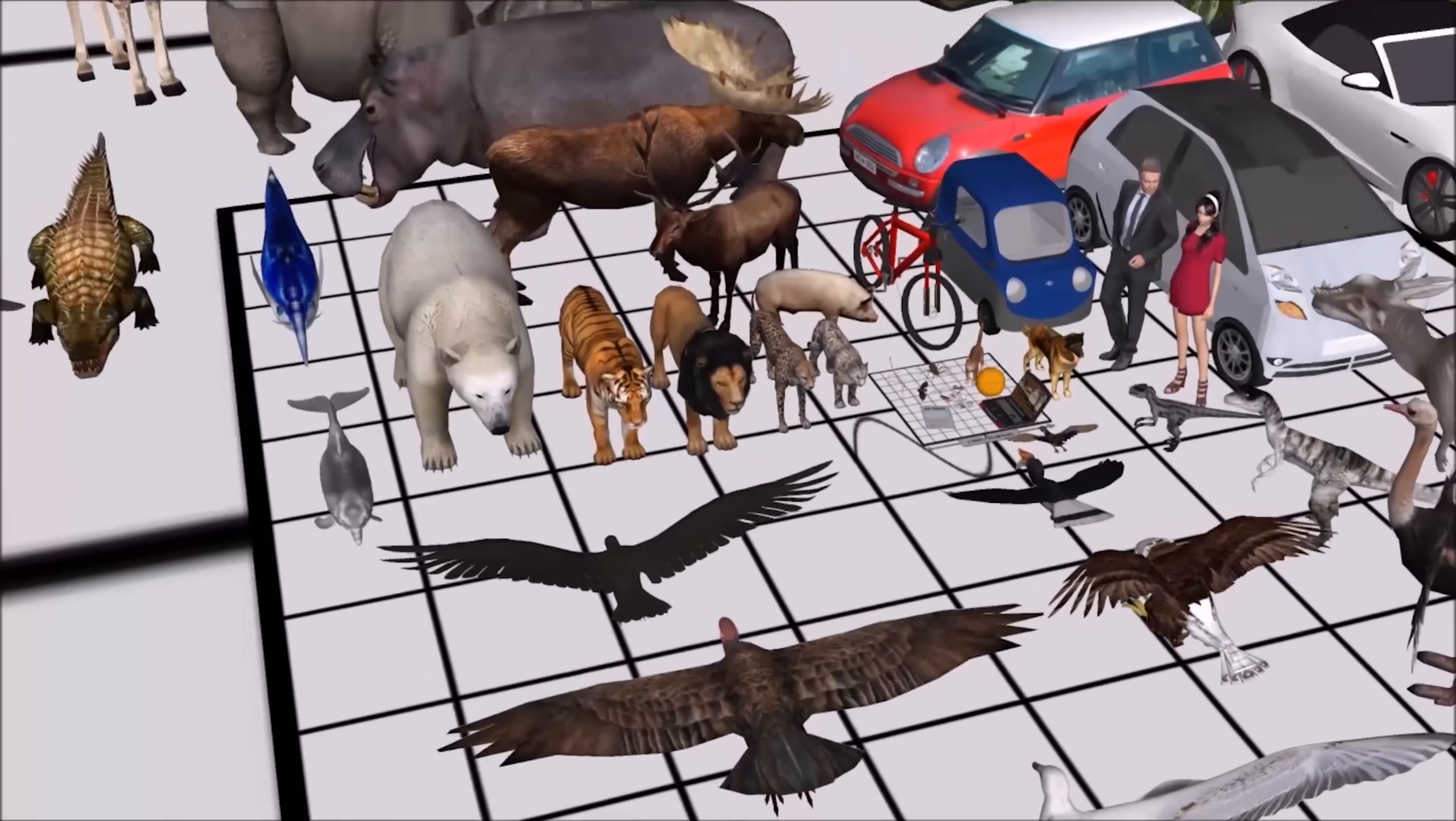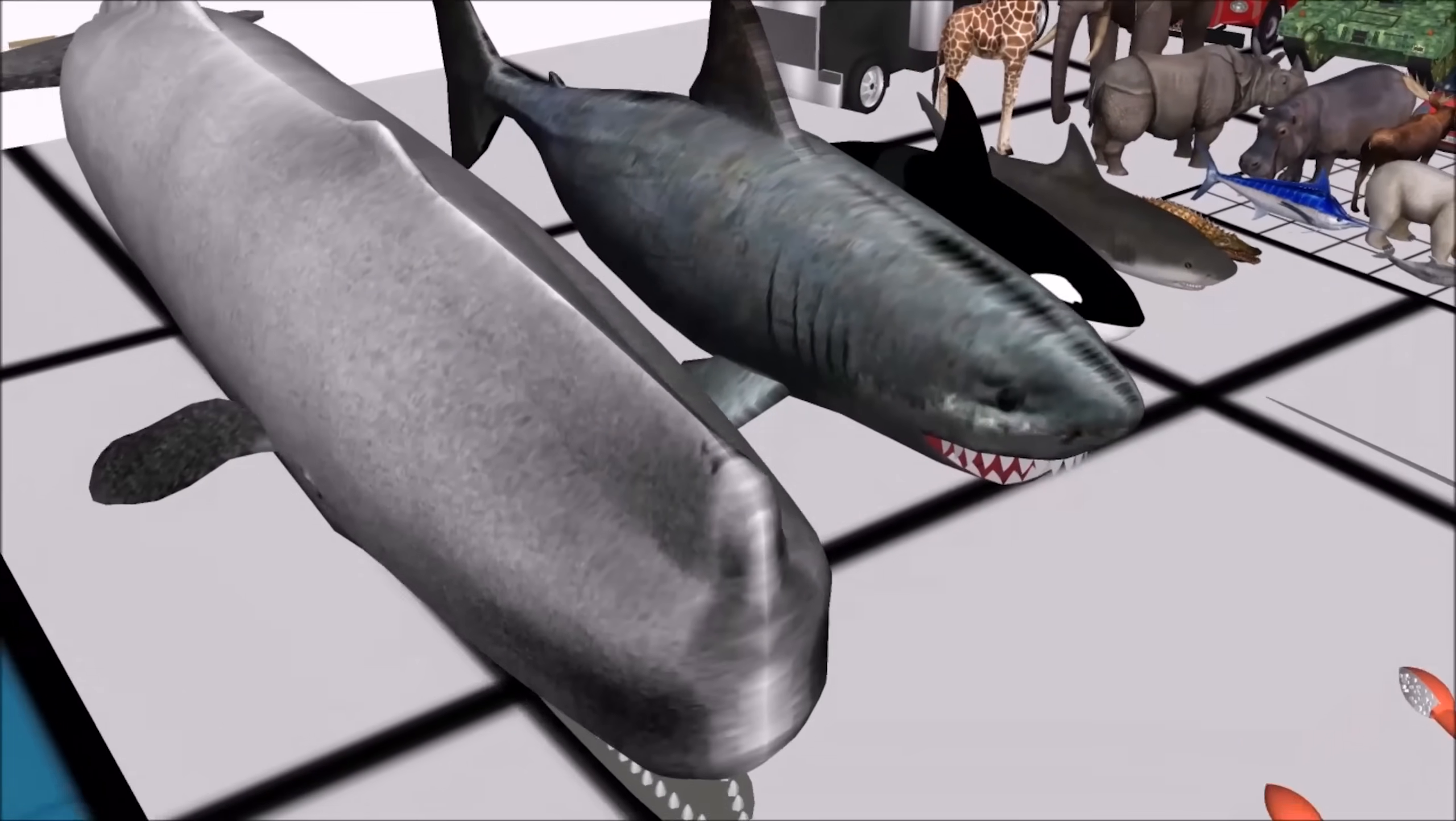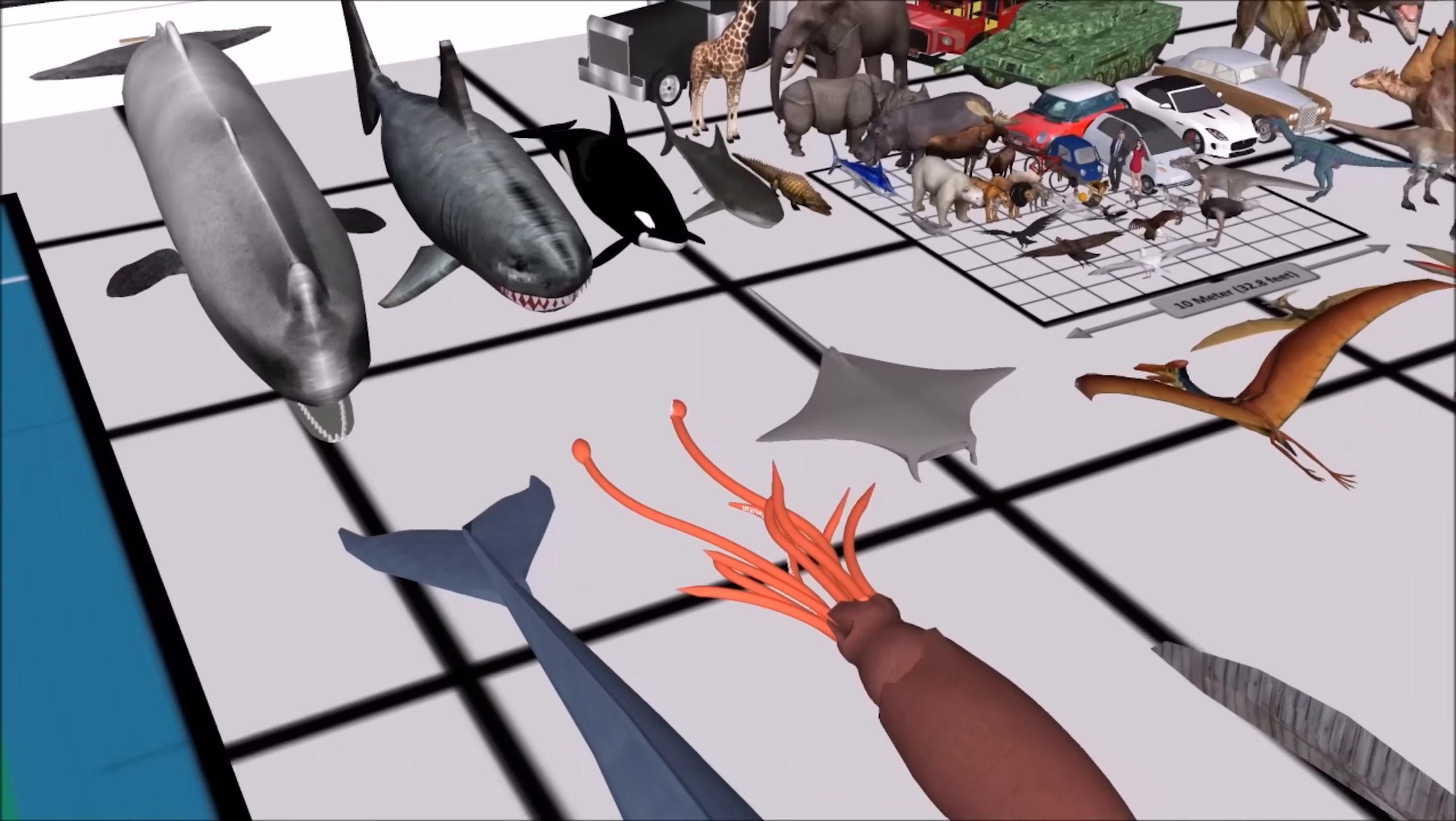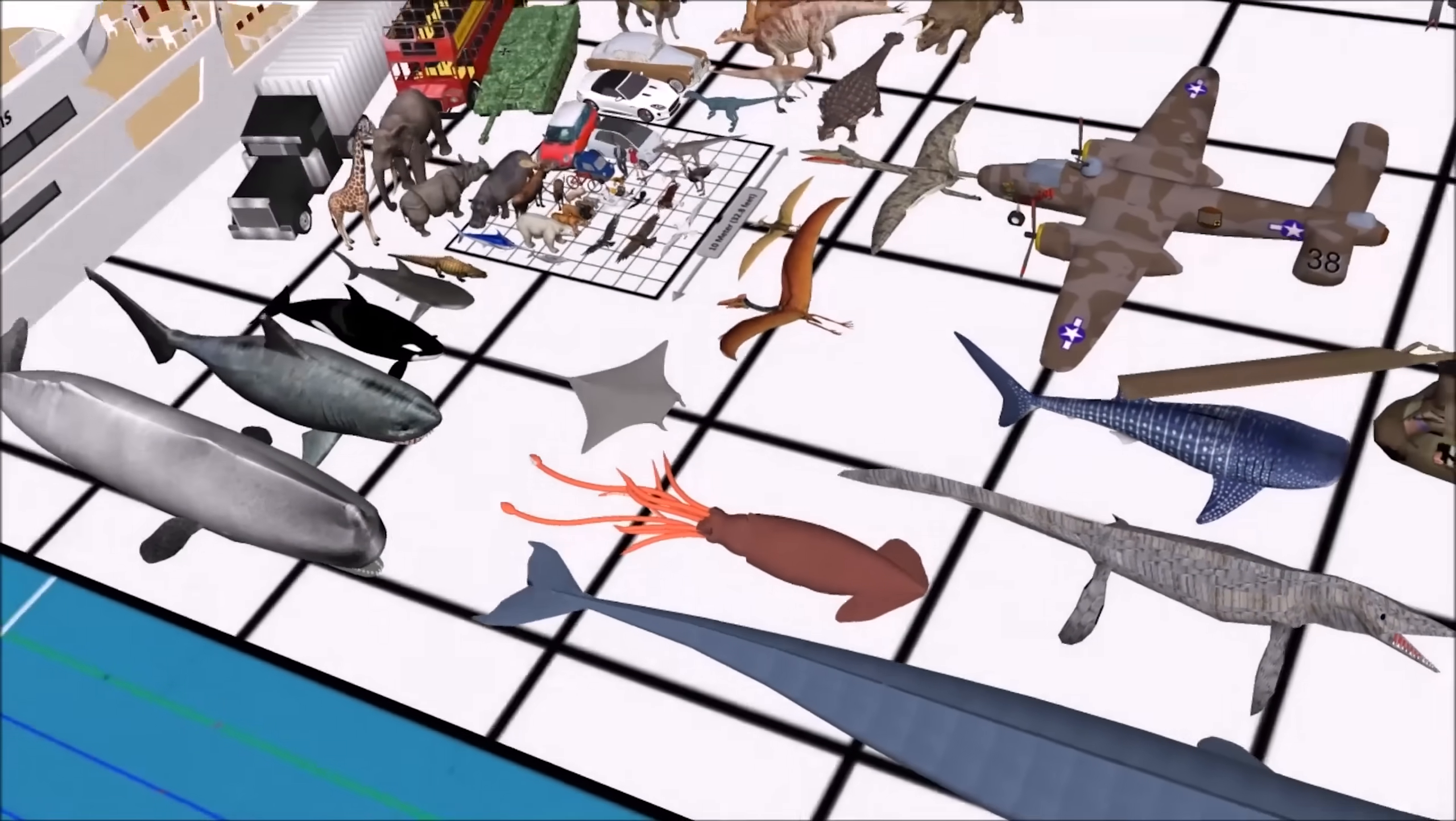And its biggest land member, the elephant. Yet the ocean dwells even larger creatures. For example, the giant squid, the Jurassic World Mosasaurus, and a blue whale, the largest animal ever existed.